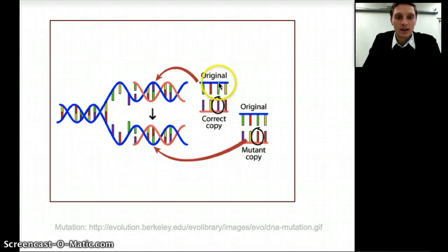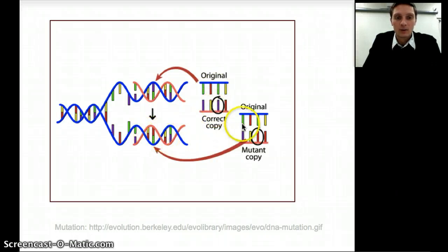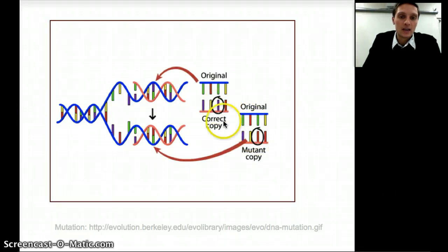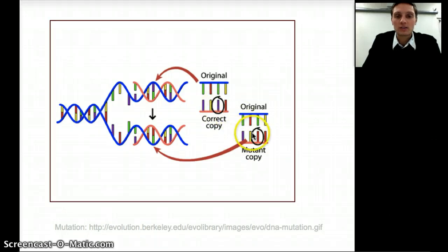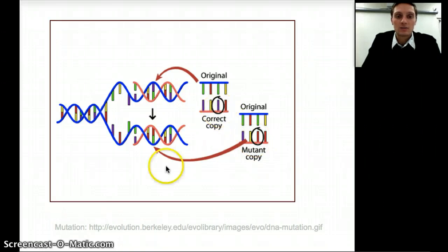Here's our original strand of DNA and a correct copy, but in our mutated copy you can see that — let's say purple is representing adenine — in the mutant copy this is representing maybe thymine. So we've had one nucleotide replaced or changed, and just having one nucleotide replaced from the original strand gives us a mutation.